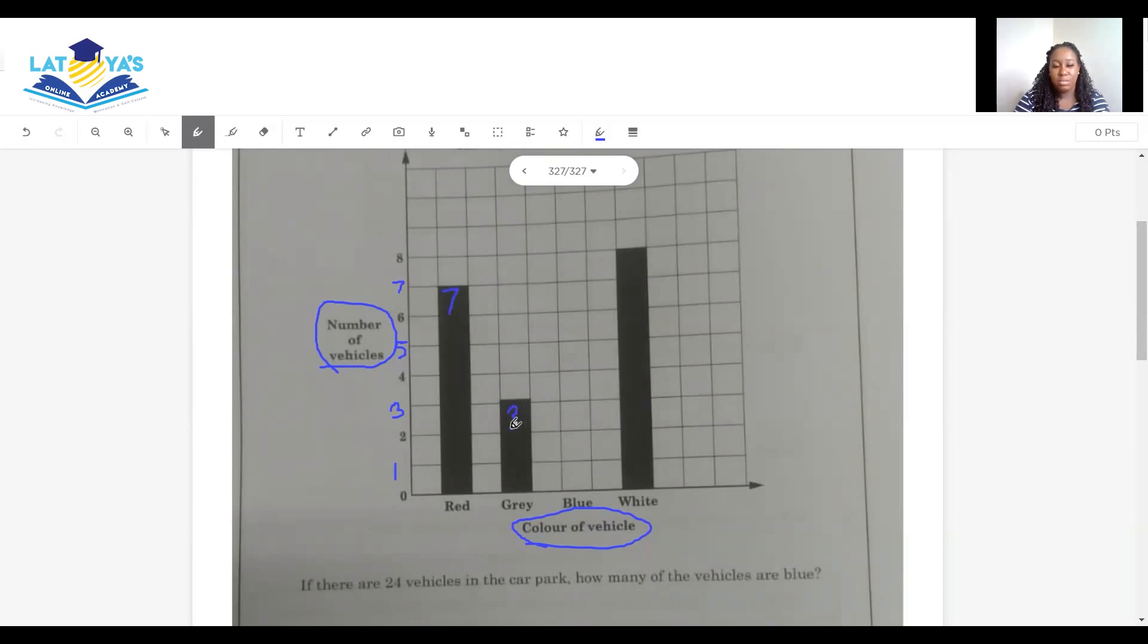So how are we going to get our answer? We need to add and then subtract. So 7 plus 3 is 10, plus 8 is going to give me 18. So now that I have 18, the next step is to subtract what I have from the total number of vehicles in the car park. We have a total of 24 vehicles. 24 subtract 18. 4 cannot take away 8. I need to borrow 1. 14 take away 8 is going to give us 6. 1 take away 1 is 0. So that tells me that blue is going to be 6. Blue is going to be 6. And that's it for section 1.